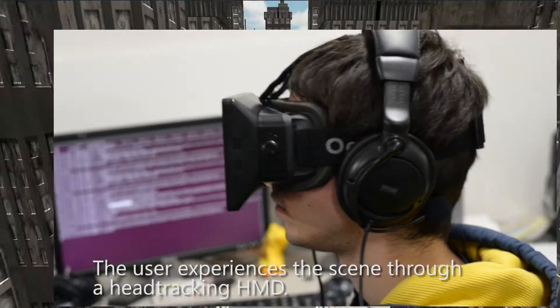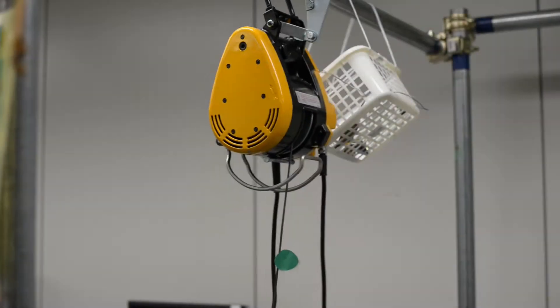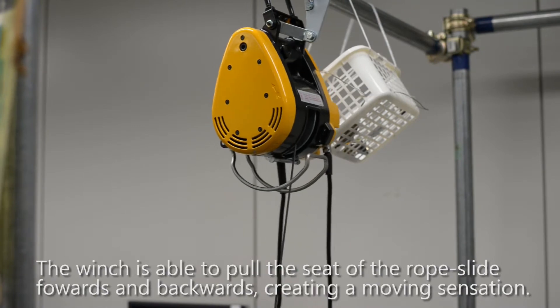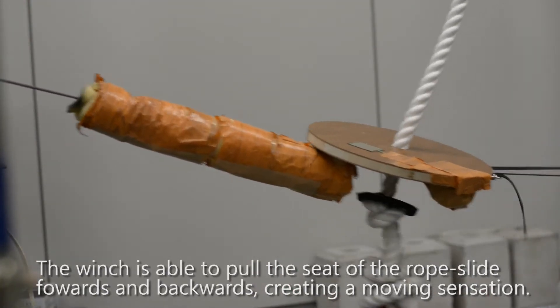The user experiences the scene through a head-tracking head mount display. The winch is able to pull the seat of the rope slide forwards and backwards, creating a moving sensation.